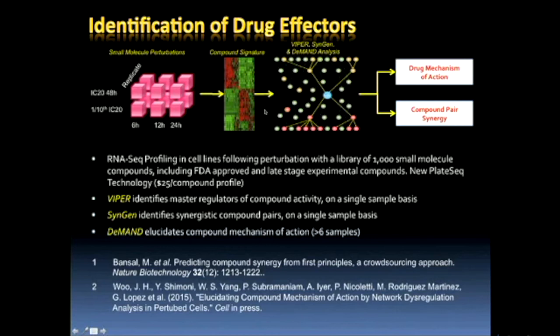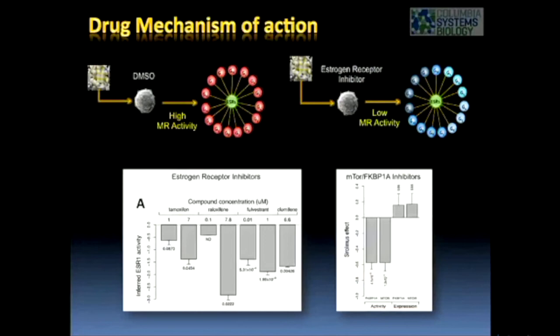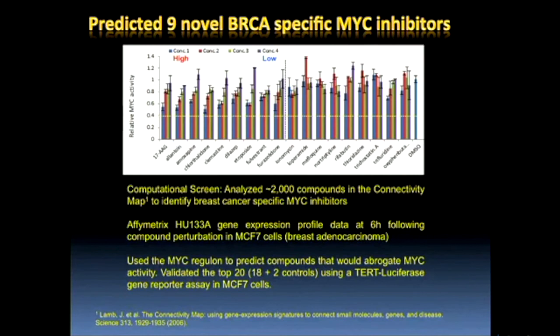Several algorithms — DIAPER in review at Nature Genetics, SYNGEN published in Nature Biotechnology, and DEMAND in press at Cell — represent different ways we look at these relationships. We can find inhibitors for proteins considered undruggable. For instance, we ran this analysis to find an inhibitor for MYC in breast cancer. The top predicted compounds — in a dose-dependent manner — produced significant inactivation of MYC using a TERT-luciferase reporter. This top-nine list essentially phenocopied the known positive control probe compound that inhibits MYC activity — a completely novel discovery of inhibitors for a gene considered undruggable.